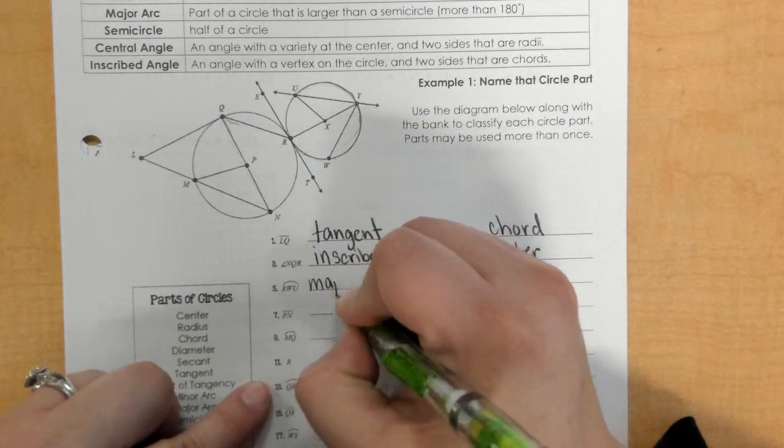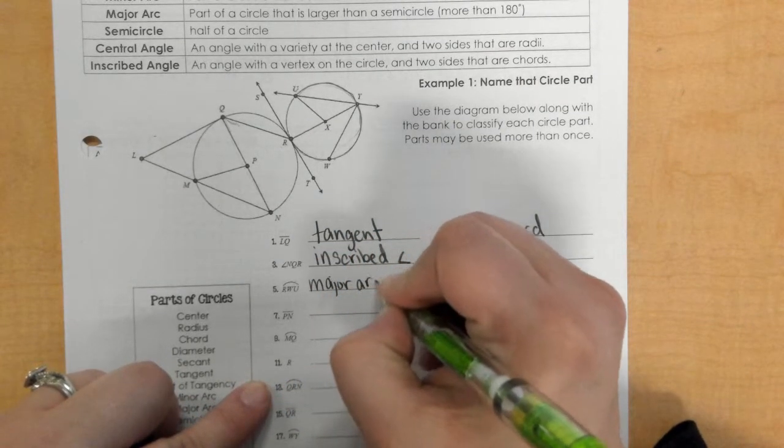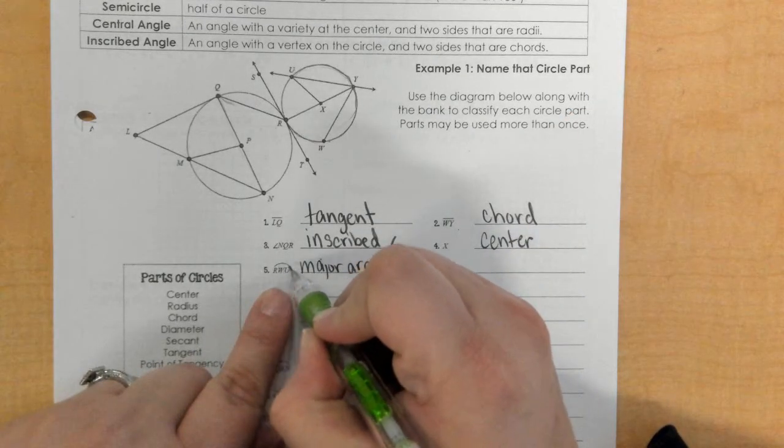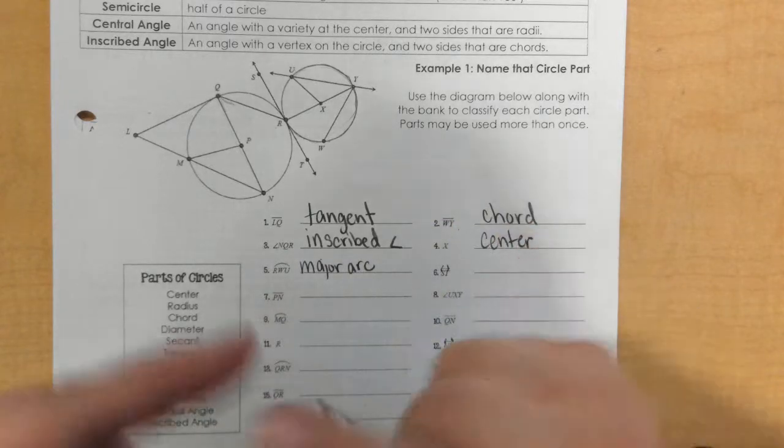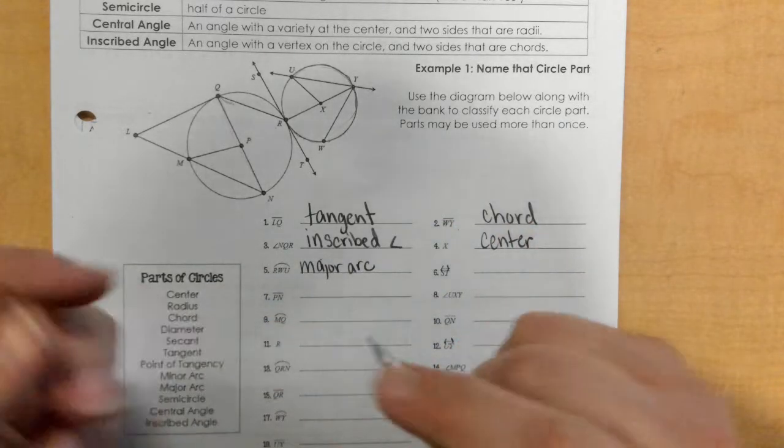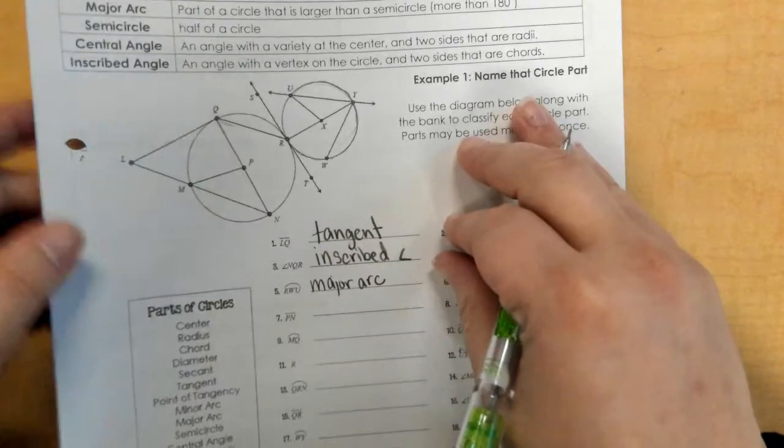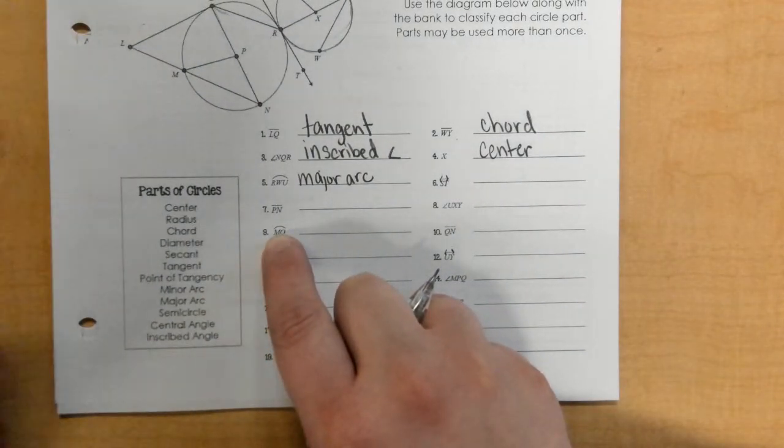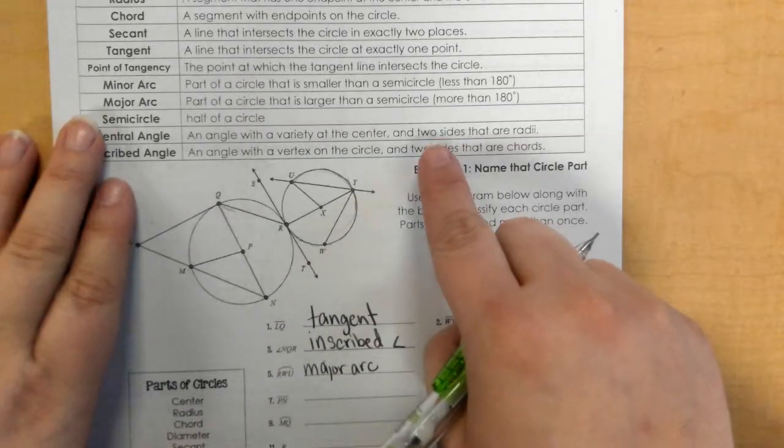So it's not a semicircle because it's bigger than that, so that's called a major arc. Another way to tell it's a major arc is that it has three letters. If it has three letters here for your arc, then it's major or it's a semicircle. If there's only two letters with an arc symbol like this one, MQ, that means that it's a minor arc or less than 180 degrees.